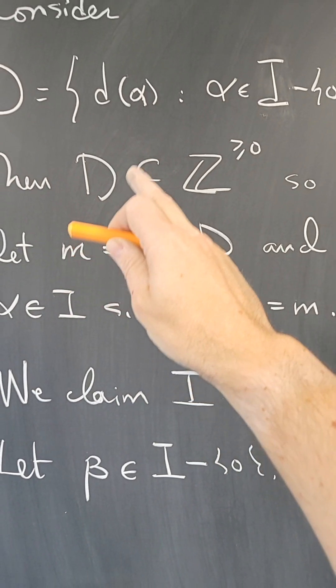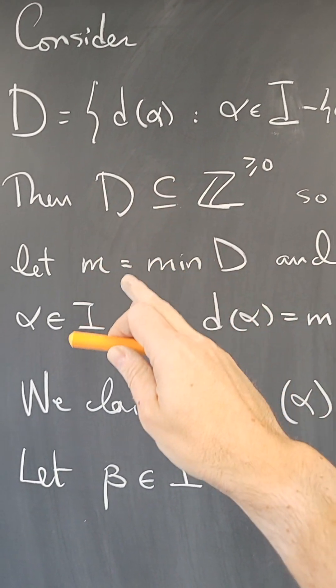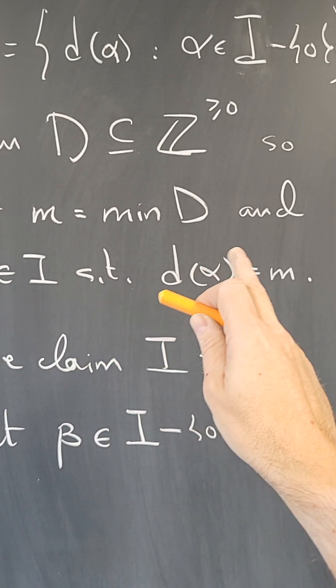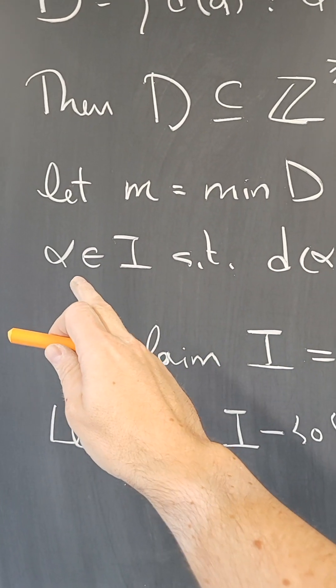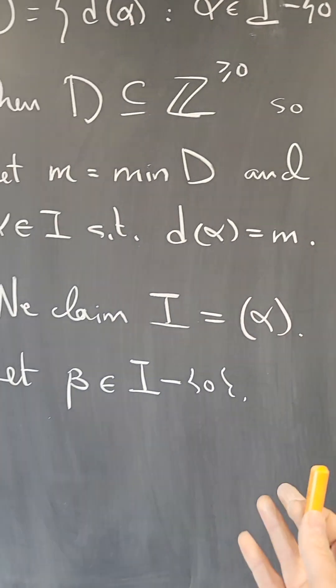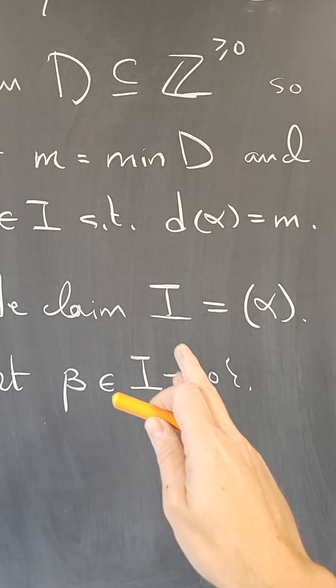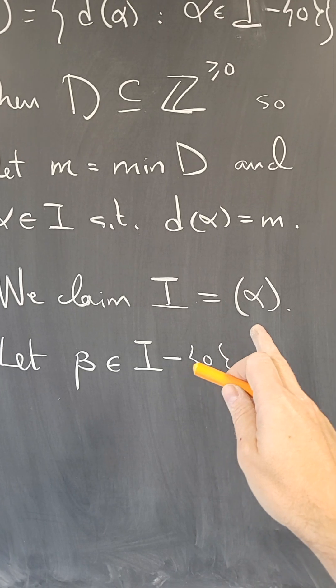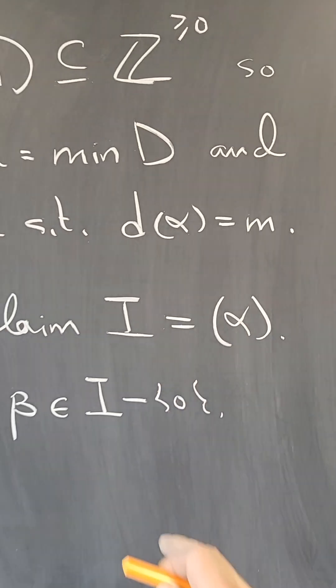And since it's a minimum, there is some alpha that obtains that minimum, and therefore there is some alpha in I such that D of alpha is M, the minimum. And we claim that actually I, the ideal I, is exactly the ideal generated by alpha.